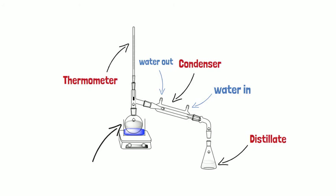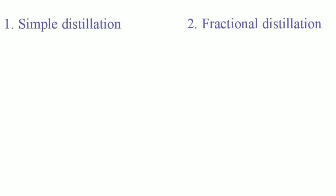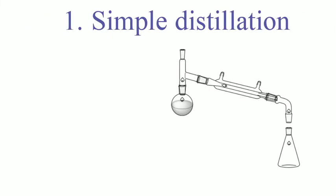There are two types of distillation: simple and fractional distillation. Simple distillation is used when the liquids to be separated have a large difference in their boiling points. Let's go over an example.